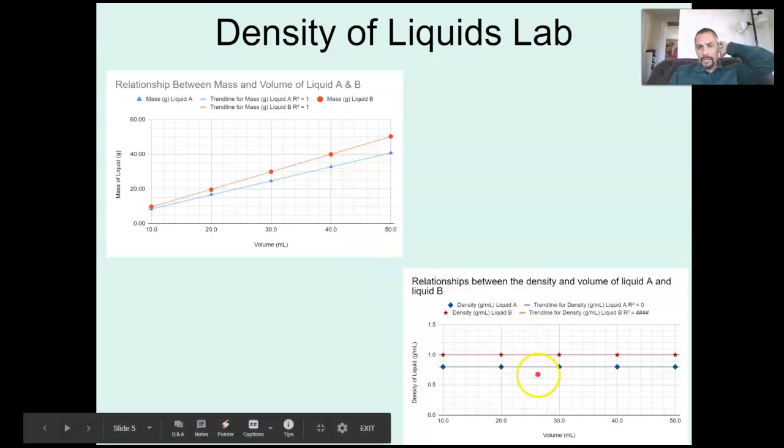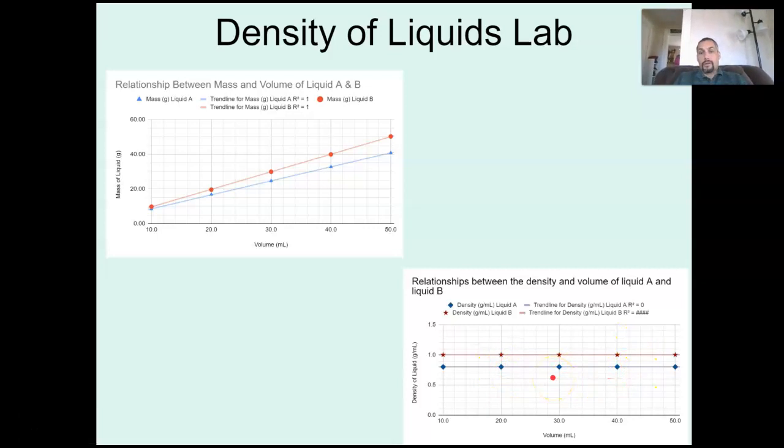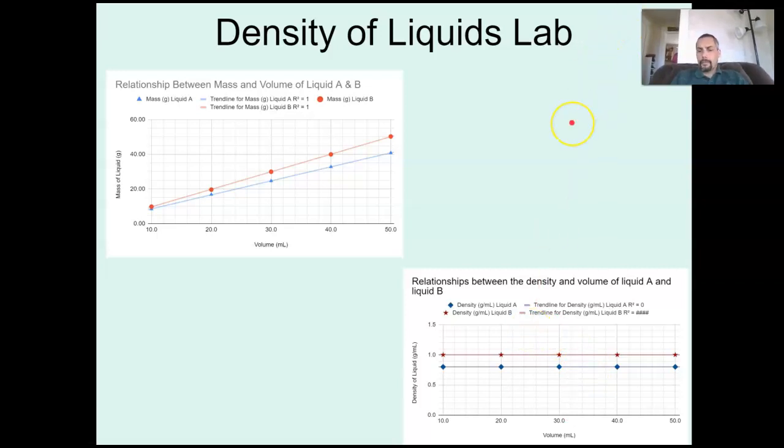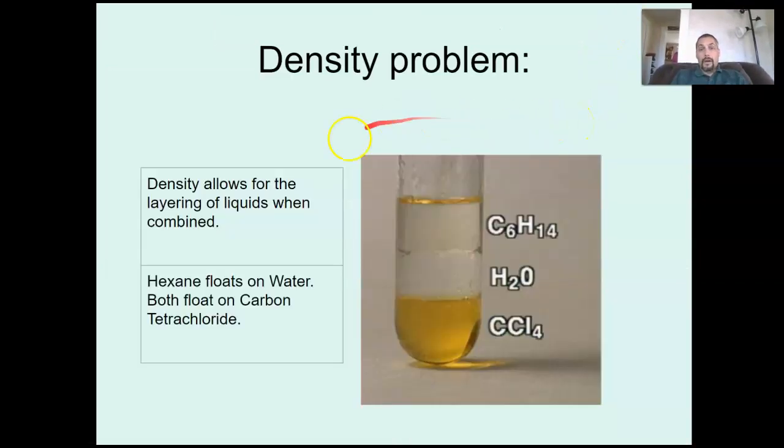This one here, you got to pay attention to. These flat lines like this, what are they showing you? This one is volume versus density. So what it's showing you is that as the volume increases, as you change the volume of your liquid, the density stays exactly the same. That is indicative that density is a characteristic property.